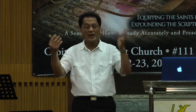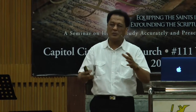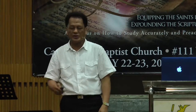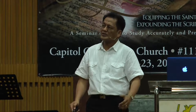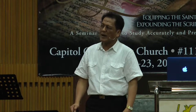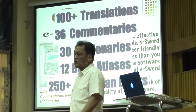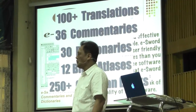Because again, if you use the new e-Sword from the internet, it will only supply you with about five translations and you miss all the other resources that we have included there. As I said: 100 translations, 36 commentaries, 30 dictionaries, 12 Bible atlases, and then 250 plus books that we have included. That's why in that one DVD alone, that's about 3.8 gigabytes of information.